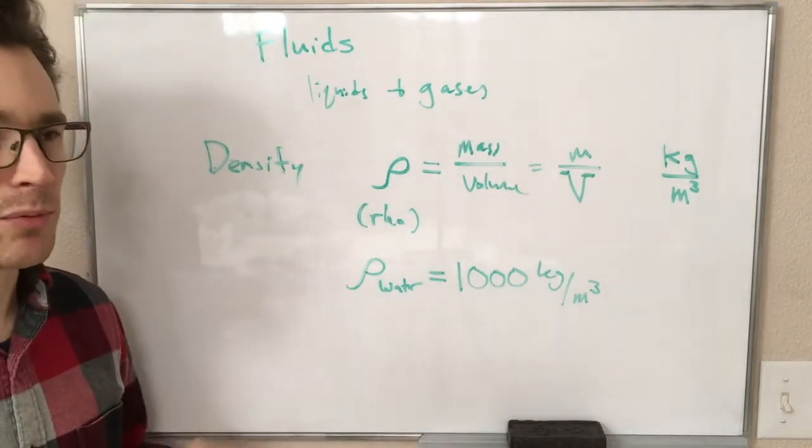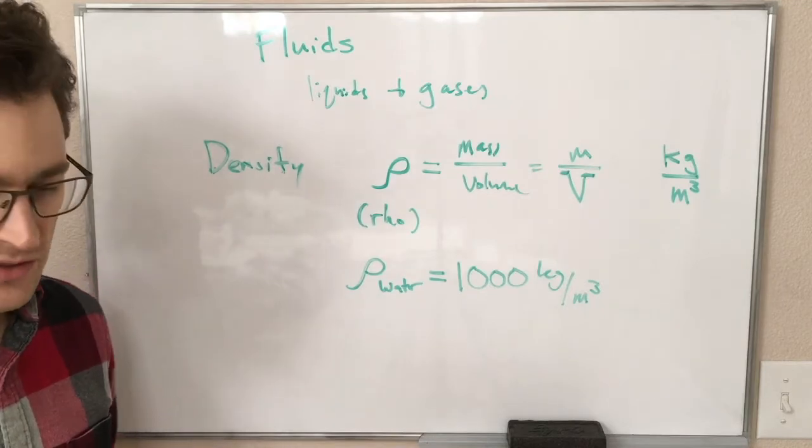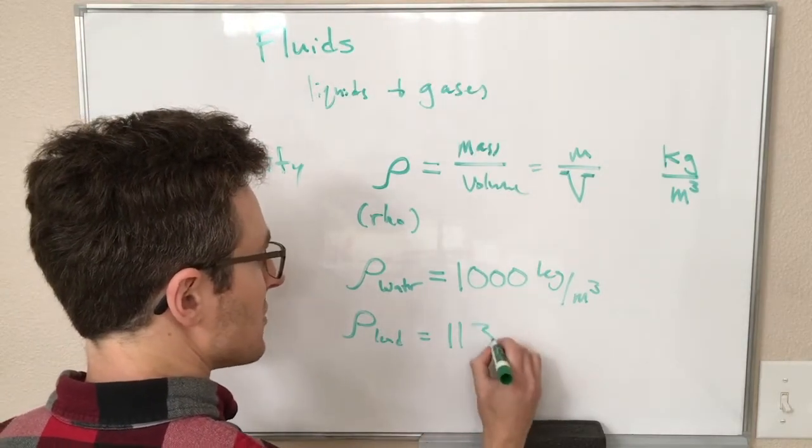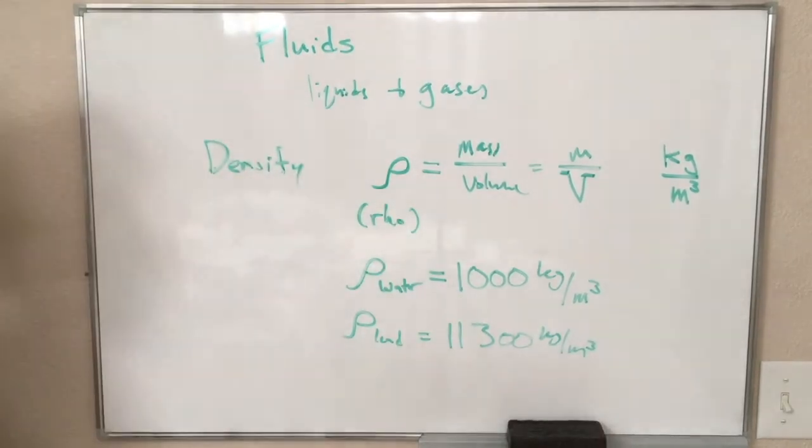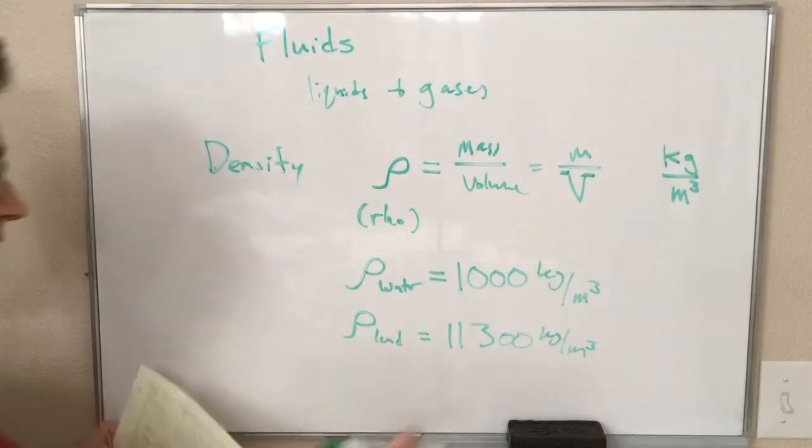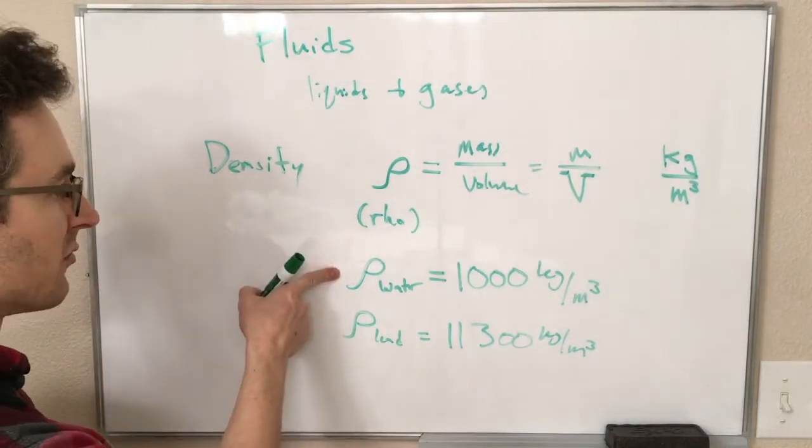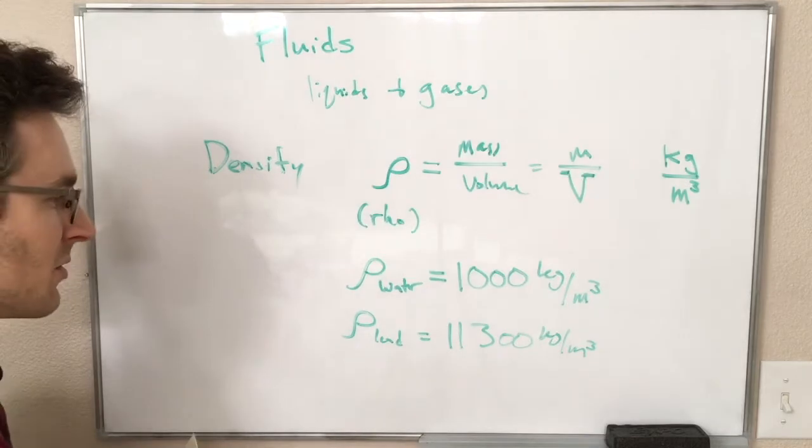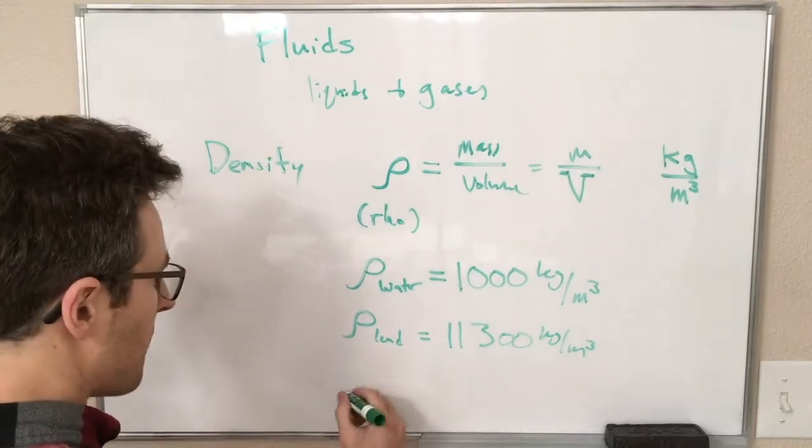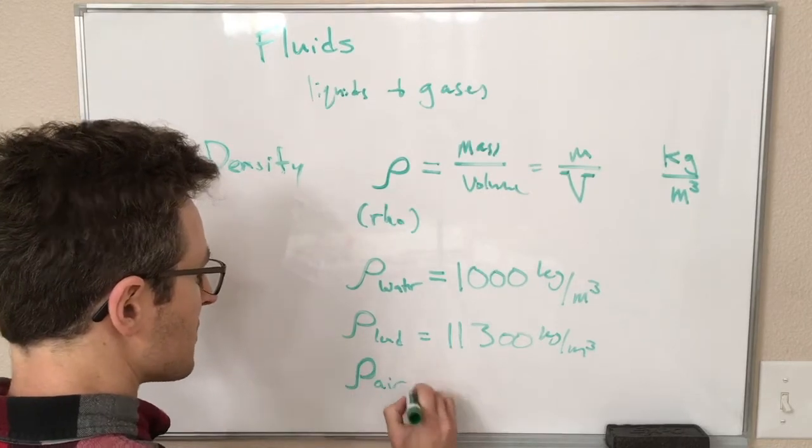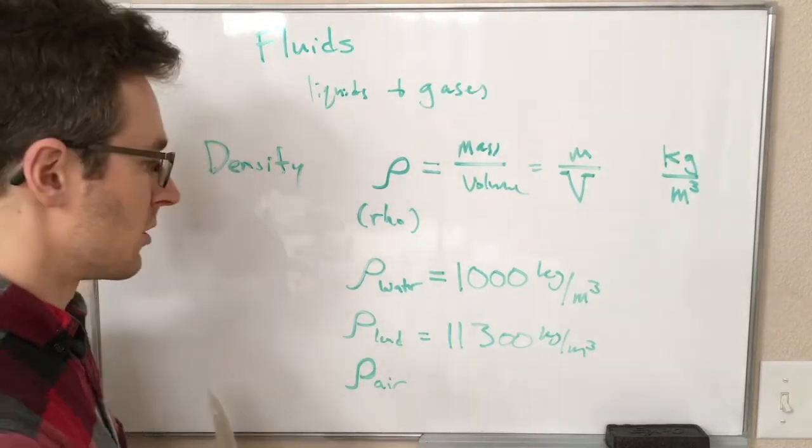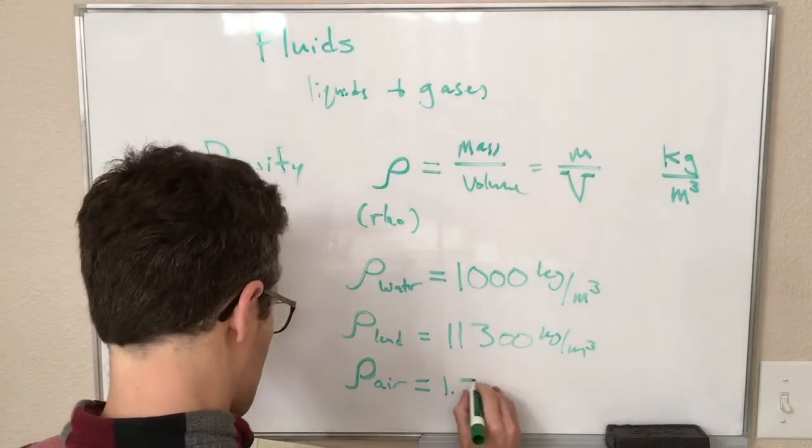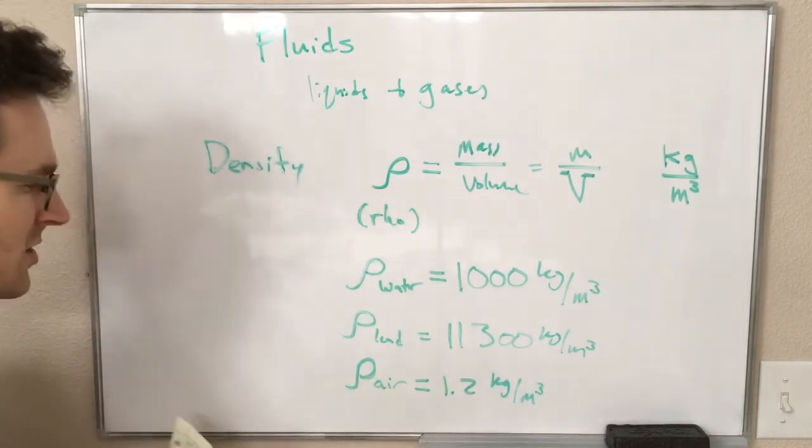In general, the numbers we're going to be using for density are probably bigger than what you've encountered in other classes. Just as a comparison for some other density values, the density of lead is 11,300 kilograms per cubic meter. And the density of air—lead, of course, is solid. Water is a fluid, a liquid. We'll be comparing some solids and liquids at various points, so these solid density numbers are going to show up also. The density of air depends to some degree on things like temperature and pressure. But typically under room conditions, the density of air is about 1.2 kilograms per cubic meter, which is kind of bigger than you expect.